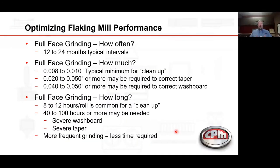For full face grinding: how often is that needed? Every 12 to 24 months. How much do we remove? Eight to 10 thousandths is a typical minimum just to clean up the roll. Twenty to 50 thousandths or more may be required to correct taper. Forty to 50 thousandths or more may be required to correct washboarding. How long do we need to grind? Typically 8 to 12 hours for a typical clean up; however, 40 to 100 hours or more may be needed for severe washboard or severe taper. More frequent grinding equates to less total time required.